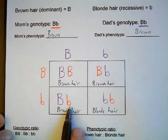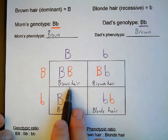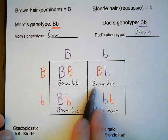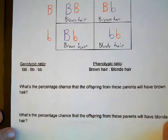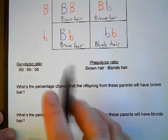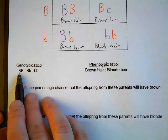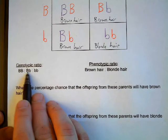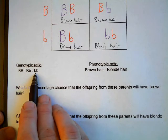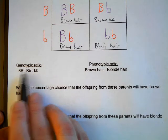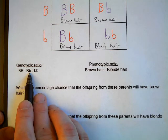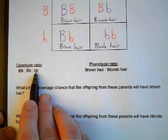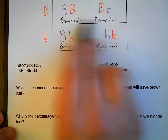So we have four possible combinations: three of which would give brown hair and one would give blonde hair. Now that we have the Punnett square filled out, we can fill out the genotypic and phenotypic ratios. The genotypic ratio is the number of homozygous dominant to number of heterozygous to number of homozygous recessive — so capital B capital B, to capital B lowercase b, to lowercase b lowercase b.